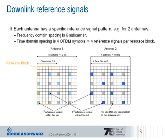As you can see in our example with two antennas, the second antenna issues its reference signal pattern at other resource elements than the first antenna. The frequency and time domain spacing stays the same — six subcarriers and four OFDM symbols — but where the first antenna would issue its reference signal pattern, the second antenna would not transmit anything, and vice versa. This is indicated by the hashed resource elements in the graph.